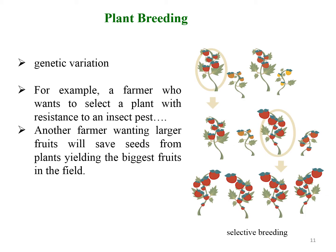The most important factor for plant breeding is genetic variation in the desired product. For example, a farmer who wants to select a plant with resistance to an insect pest will watch for plants that survive an insect attack. Another farmer wanting larger fruits will save seeds from plants yielding the biggest fruits in the field. The most important factor for selective breeding is to start with plenty of genetic variation. After selection of the required character, they then multiply it.